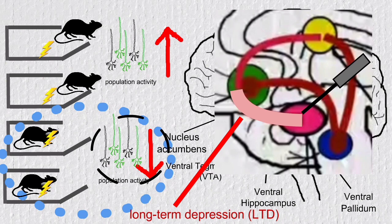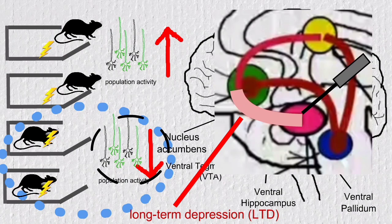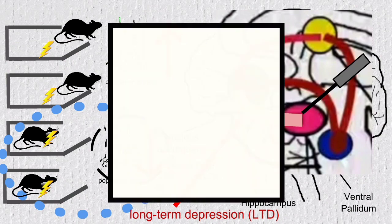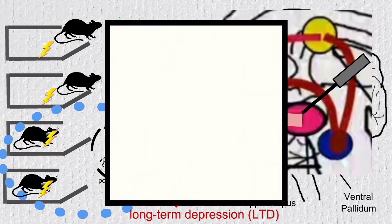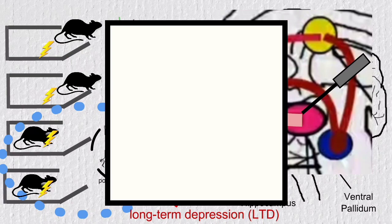The rats in the experiment were exposed to the exact same amount of stress and divided into two groups according to their response to that amount of stress. In reality, though, everybody has an individual stress tolerance, and most likely everybody will, at a certain amount of stress, develop a weakening of that pathway, and therefore symptoms of anhedonia.